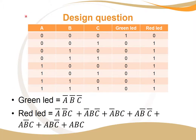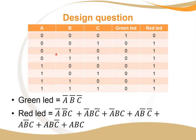We make a truth table with three sensors A, B, and C, and fill it out as usual — starting from zero through all eight combinations. For the green LED, it is high only when all sensor values are zero, so we place a one there and zeros everywhere else. For the red LED, when at least one of the sensors is high or one, the red LED goes on. So the only row where red is off is the first line where all inputs are low.